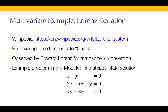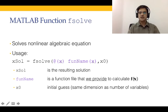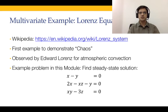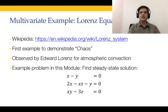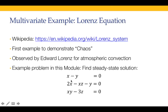Next we are going to cover a multi-variable example. The example is a three-dimensional system where x is a 3D variable and F is a 3D vector-valued function. We will take the Lorenz system, which was the first example to demonstrate chaos. The equations are: x - y = 0, 2x - xz - y = 0, and xy - 3z = 0.